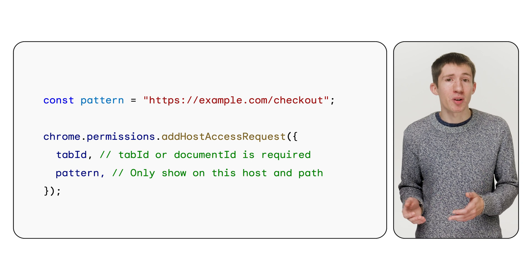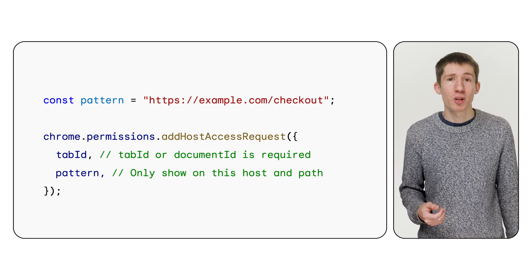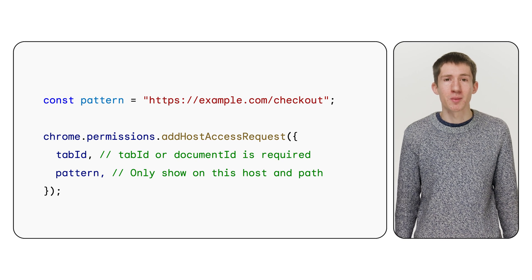We worked on this API with other browsers in the web extensions community group, who contributed significantly to the overall design. The goal is for this to be a cross-browser API that shows relevant UI decided on by the user agent. For example, if you're building a shopping extension and a user lands on a checkout page where you'd like to offer a discount but need more page access, you can call the add host access request API to show an access request in the toolbar. This is similar to permissions.request, but doesn't take focus and is less intrusive to the user.